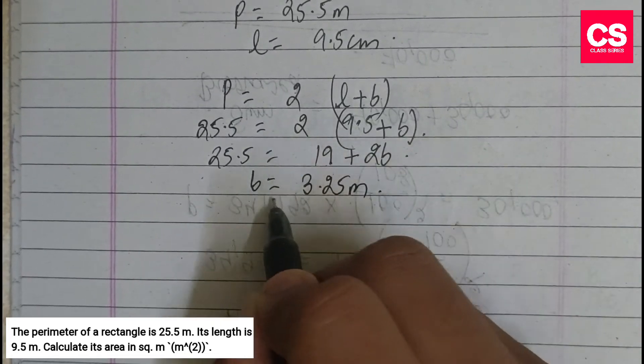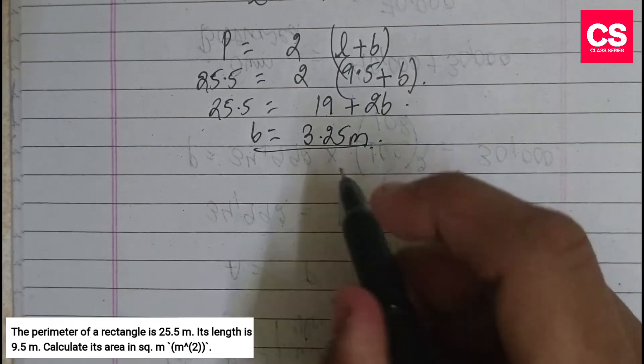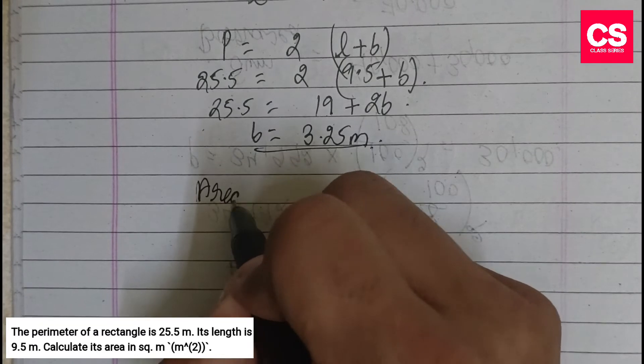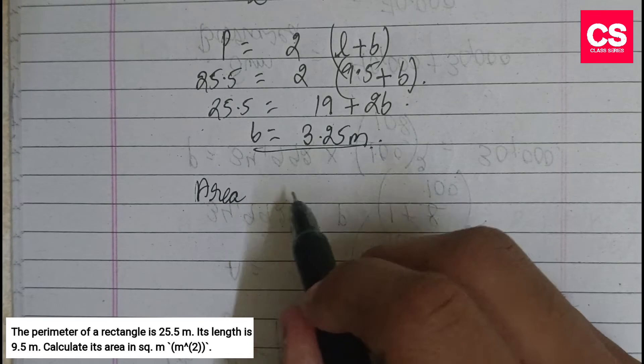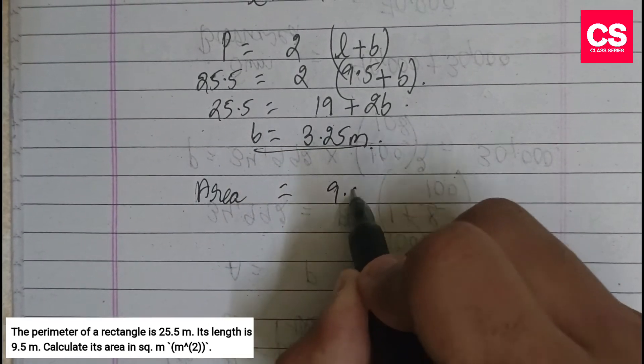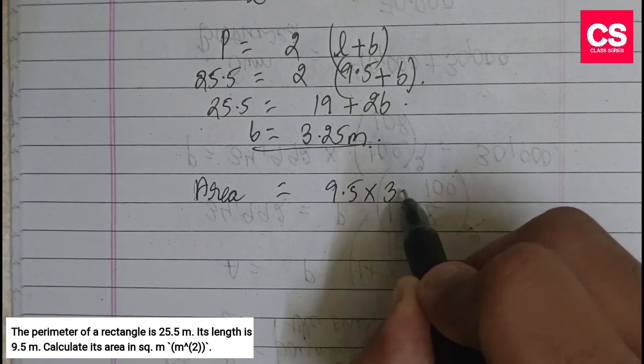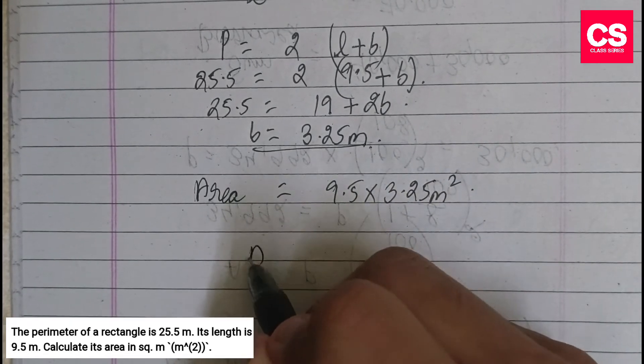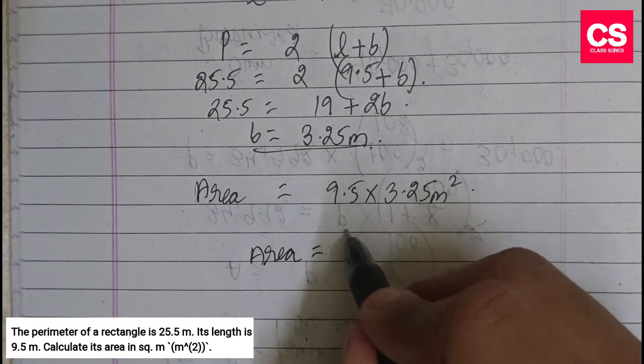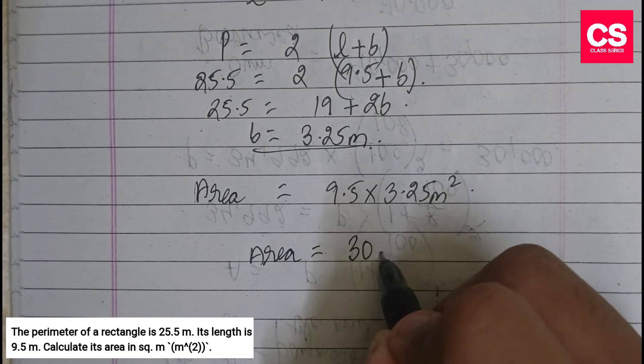So we will write the area in square meters. Area is going to be 9.5 into 3.25 meter square, so basically your area is going to be equal to 30.875 meter square.